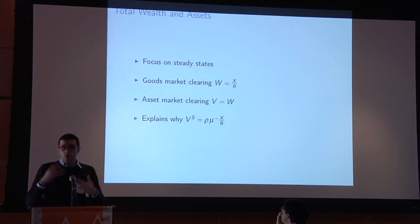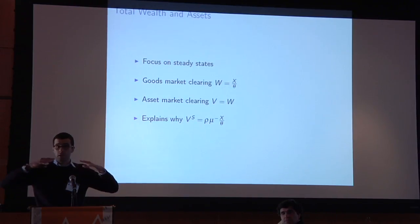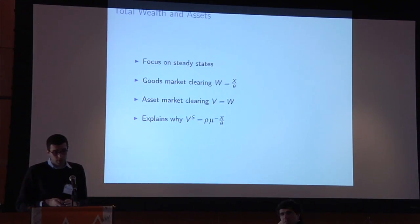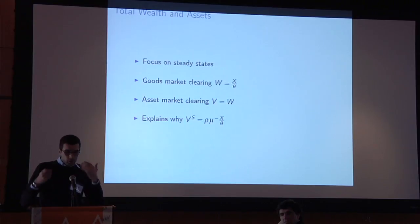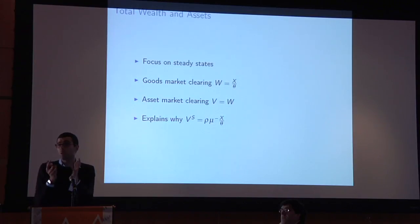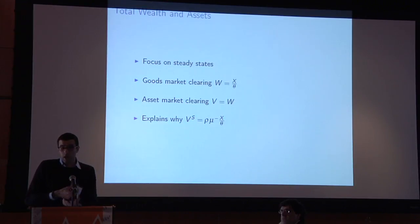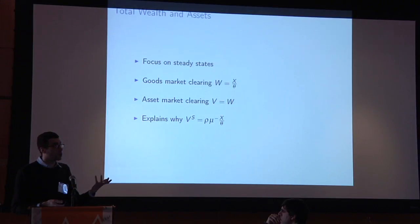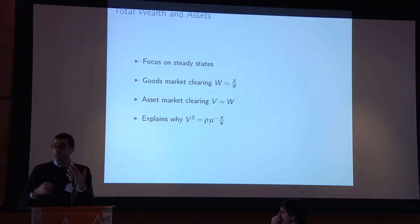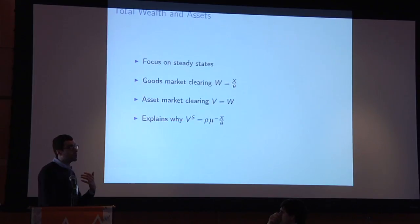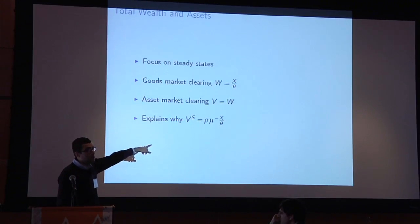I focus entirely on steady states where everything is constant — there's a theorem in the background confirming convergence to such a situation. By requiring goods market clearing, total wealth W times the consumption rate theta must equal the supply of goods in the economy. That immediately gives you the value of total wealth, which also equals the value of assets. Applying this after the bad Poisson shock tells you why the supply of safe assets is determined as it is.